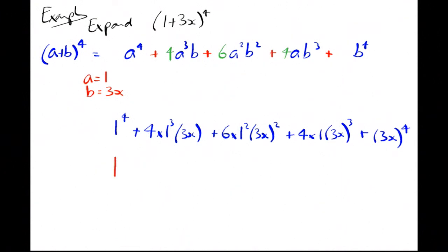1 to the power anything is 1, so I get 1 + 12x. 3x squared is going to be 9x² times by the 6, I get 54x². 3x cubed is going to be 27x³ times by the 4, so that's 108x³. And 3x to the 4 is going to be 81x⁴.